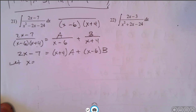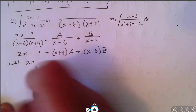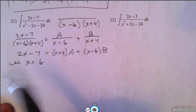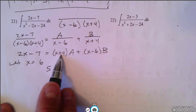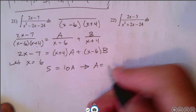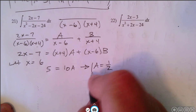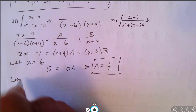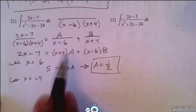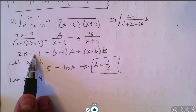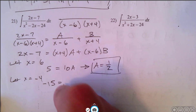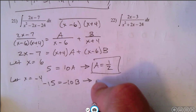When we multiply by the LCD we get 2x minus 7 on the left, and on the right we have x plus 4 times a plus x minus 6 times b. Let x equal 6 first to solve for a: 2 times 6 is 12, minus 7 is 5. On the right, 6 plus 4 is 10, so 5 equals 10a, giving us a equals one half. Now let x equal negative 4 to find b: 2 times negative 4 is negative 8, minus 7 is negative 15. Negative 4 minus 6 is negative 10, so negative 15 equals negative 10b, giving us b equals 3 halves.